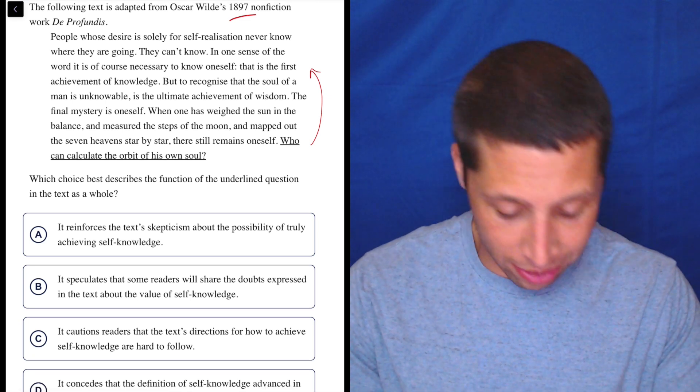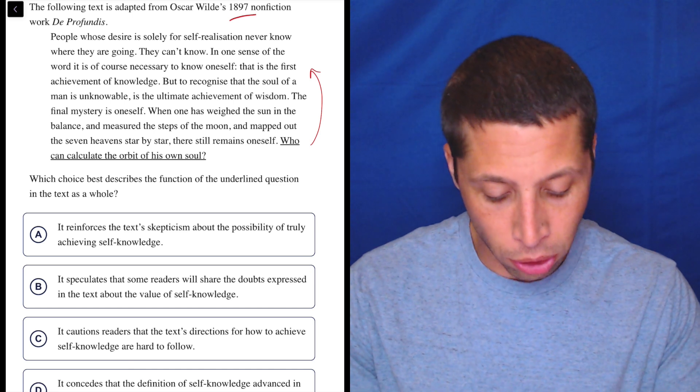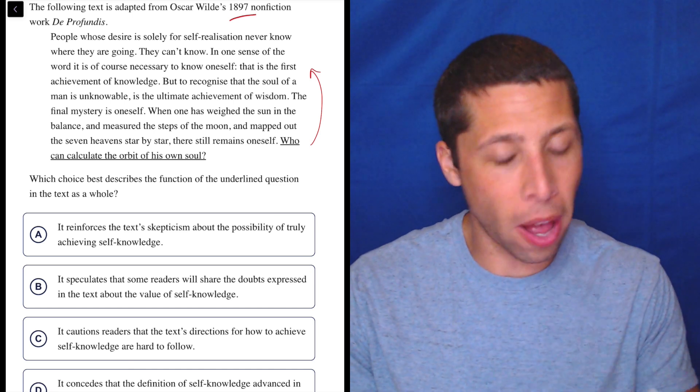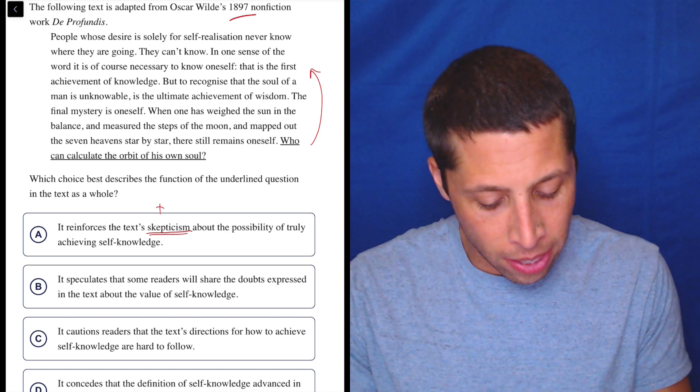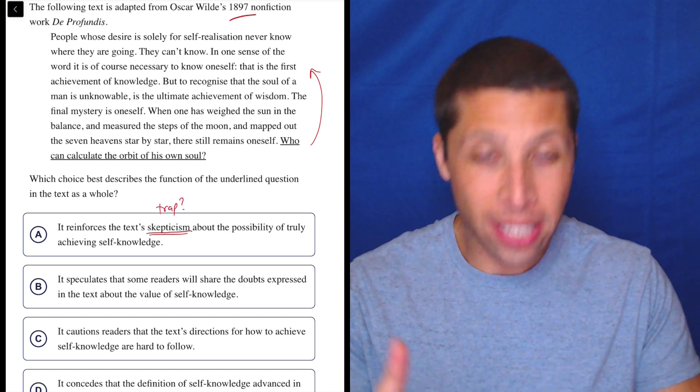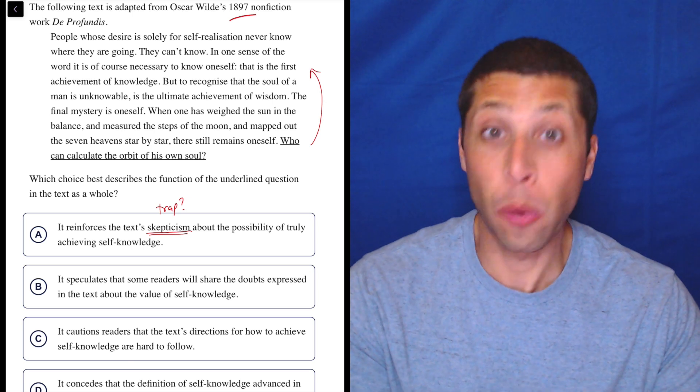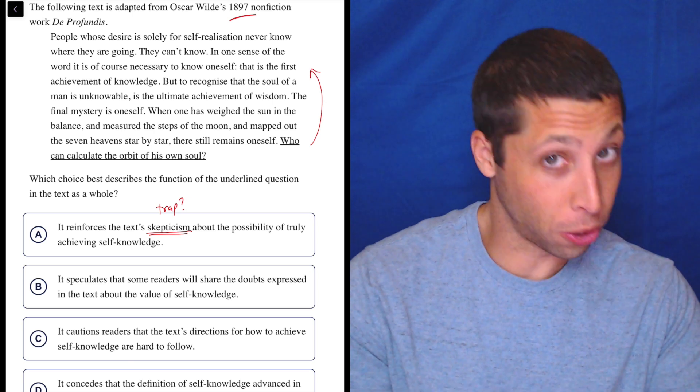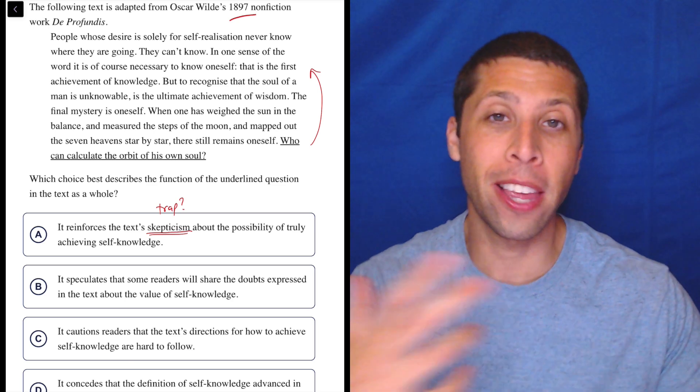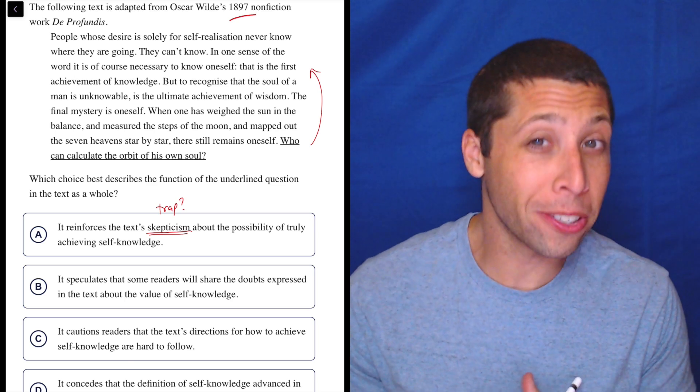It reinforces the text's skepticism about the possibility of truly achieving self-knowledge. So the one thing that does bother me with this choice, and it's not necessarily wrong, but it worries me. Because I've seen the SAT do this before. A lot of times they'll have words, and then they'll use words like skepticism, or the word question, or the word ask. So I'm like, okay, is it really skepticism?